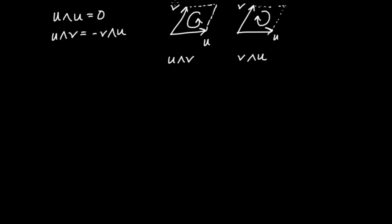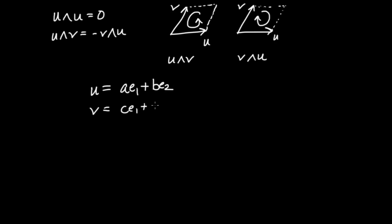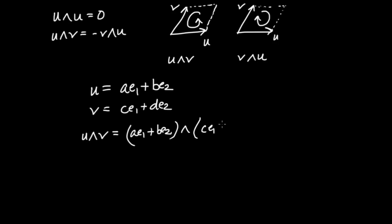Going back to the pictures: if U∧V is a counterclockwise-oriented parallelogram, then V∧U has the same area but opposite orientation — a clockwise circulation. Now let's consider two arbitrary vectors: U = A·E1 + B·E2 and V = C·E1 + D·E2, and compute U∧V. Distributing and pulling out scalars, we get AC·(E1∧E1) + AD·(E1∧E2) + BC·(E2∧E1) + BD·(E2∧E2).